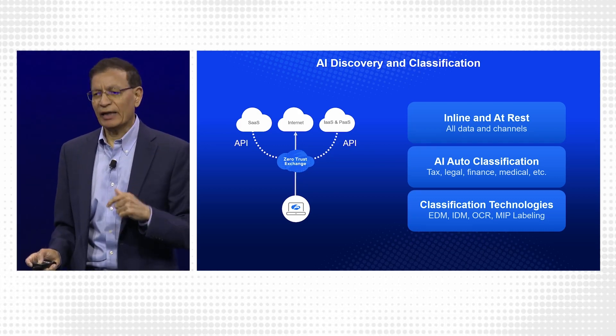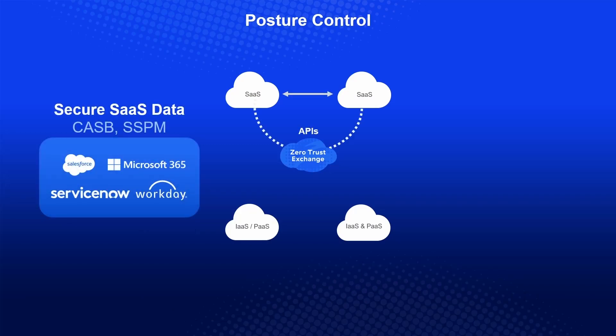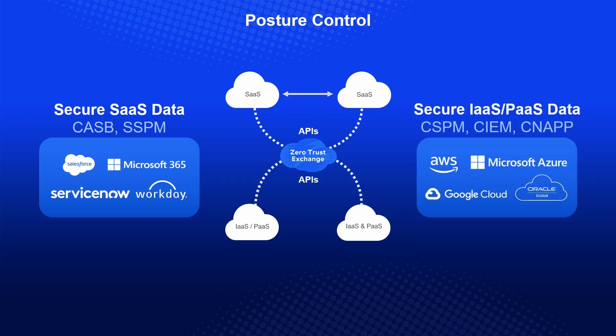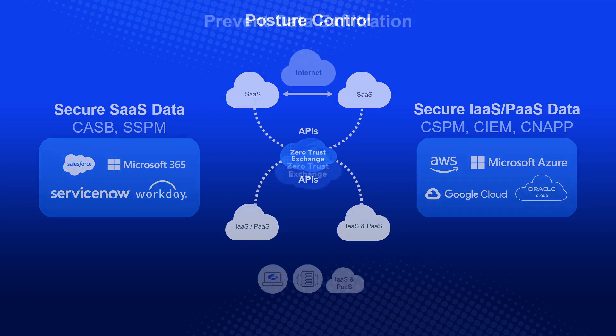Classification can be done inline as traffic is going out. We have hardcore technologies like exact data match (EDM), index data match, OCR for recognizing optical characters, and integration with Microsoft Information Protection — all to ensure you can discover and classify your data. The second area is posture control: making sure your data in SaaS applications and in the cloud is taken care of. The full CNAPP, CSPM, and CIM type of offerings are available from Zscaler.